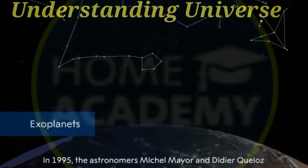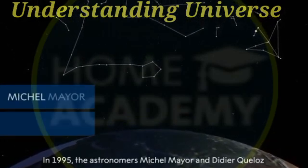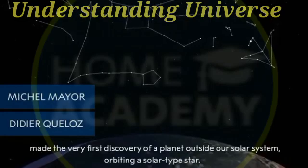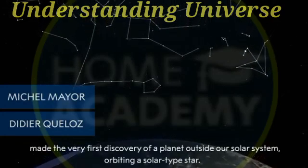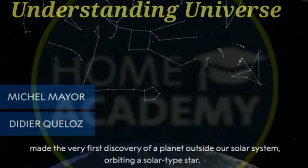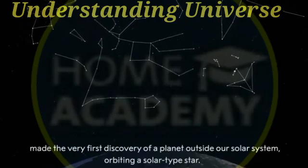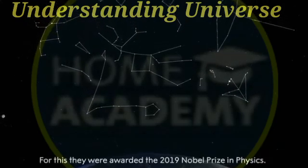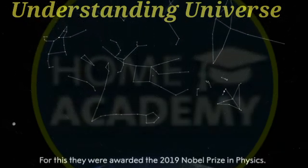In 1995, the astronomers Michel Mayor and Didier Queloz made the very first discovery of a planet outside our solar system, orbiting a solar-type star. For this, they were awarded the 2019 Nobel Prize in Physics.